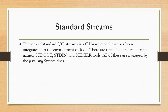Standard streams — the idea of standard IO streams is a C library model that has been integrated into the environment of Java. There are three standard streams: stdout, stdin, and stderr. All of these are managed by the java.lang.System class.